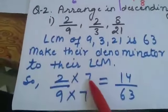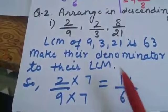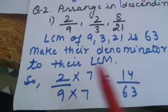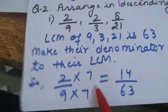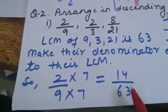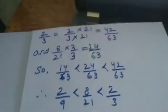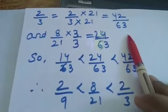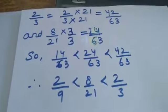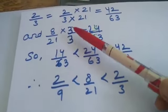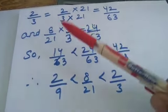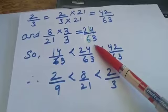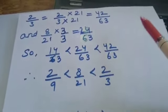For each fraction, make the denominator equal to the LCM 63. For 2 by 9, multiply numerator and denominator by 7 to get 14 by 63. For 2 by 3, multiply by 21 to get 42 by 63. For 8 by 21, multiply by 3 to get 24 by 63. Now all fractions have the denominator 63.